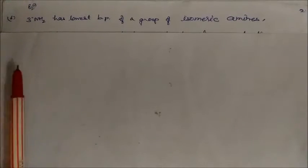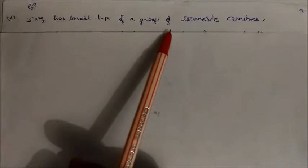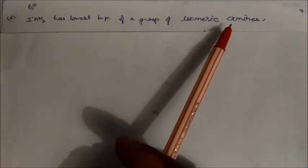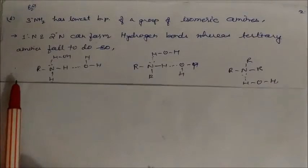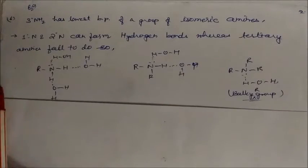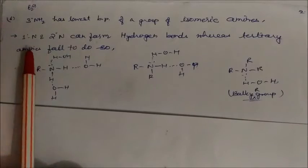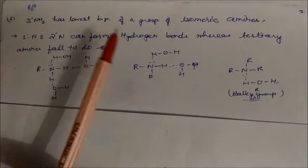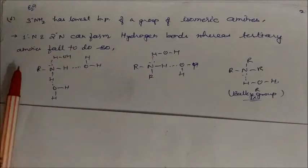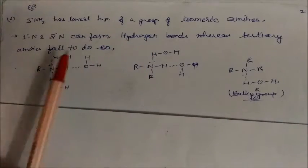Tertiary amines have the lowest boiling point among isomeric amines. Primary and secondary amines can form hydrogen bonding, while tertiary amines fail to do so.